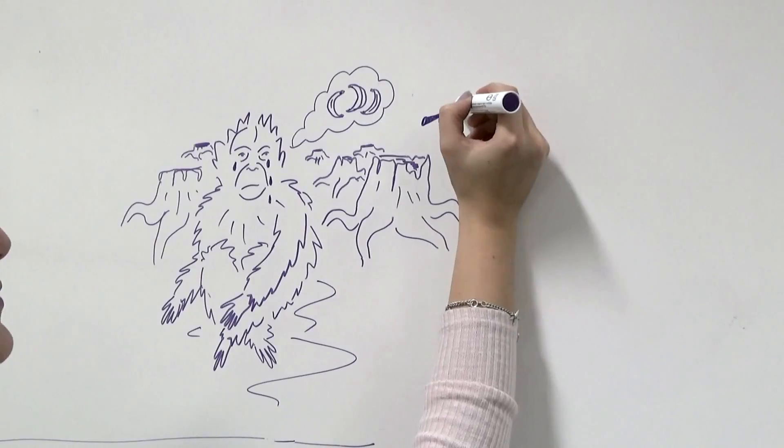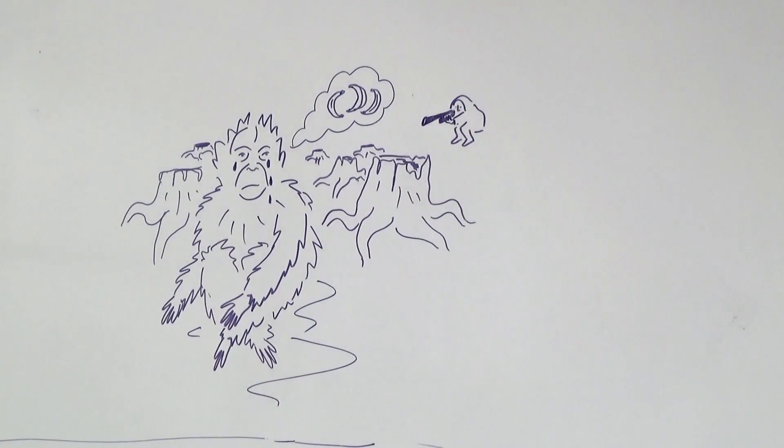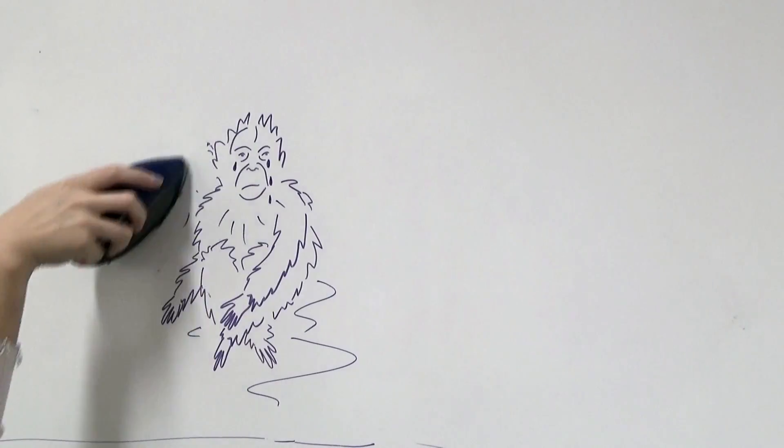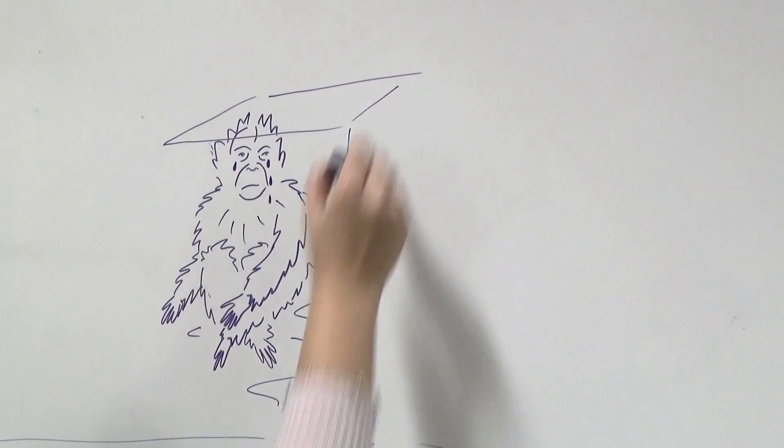Baby orangutans are being stolen from their mothers to be kept or sold as pets. It has been predicted that orangutans will be extinct in the wild within the next five to ten years.